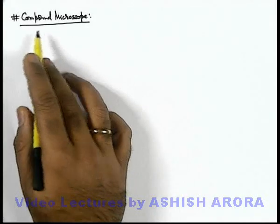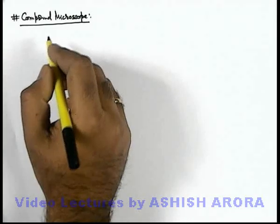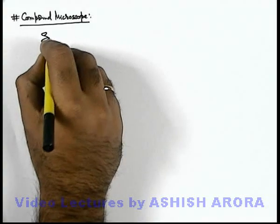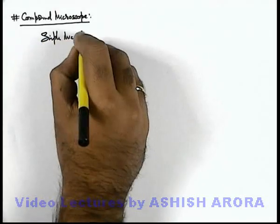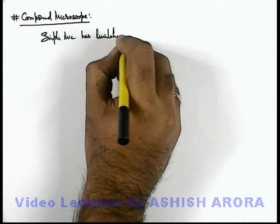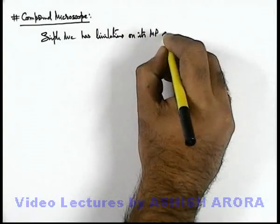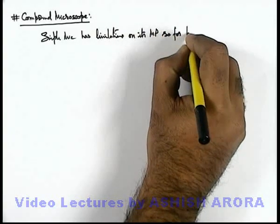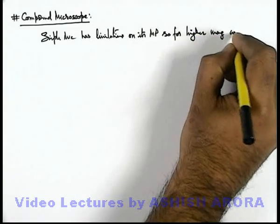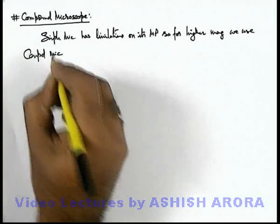Let us now study about compound microscope. In the previous section we have already studied about simple microscope. A simple microscope has limitations on its magnifying power, so for higher magnifications we use a compound microscope.